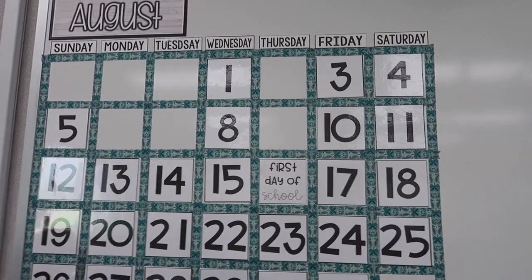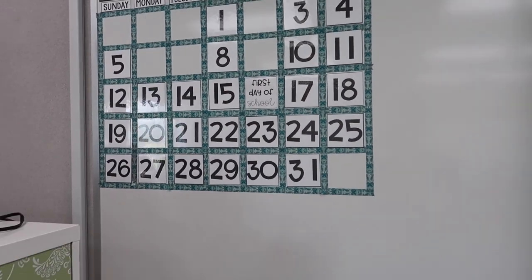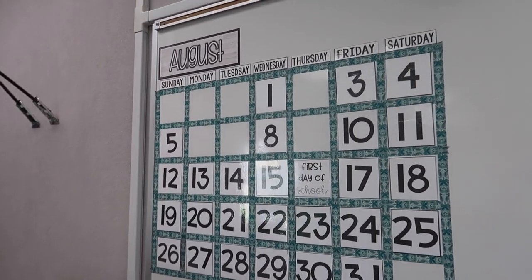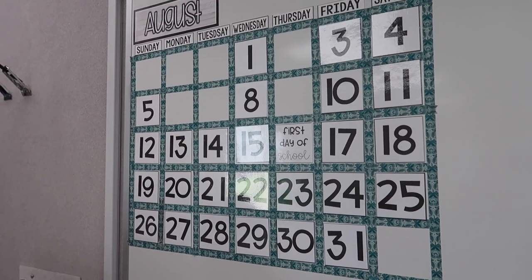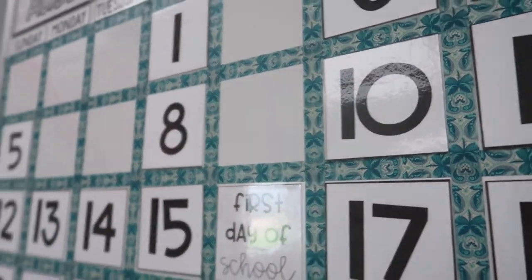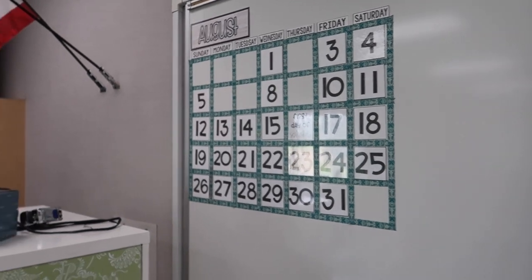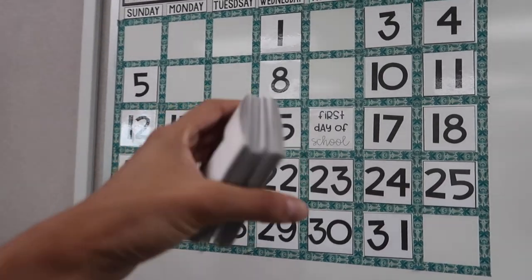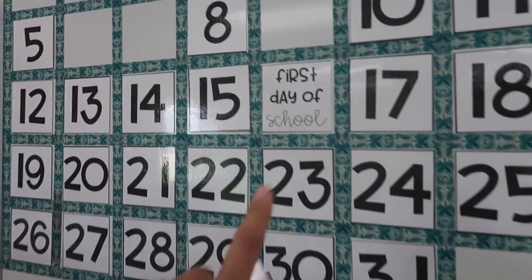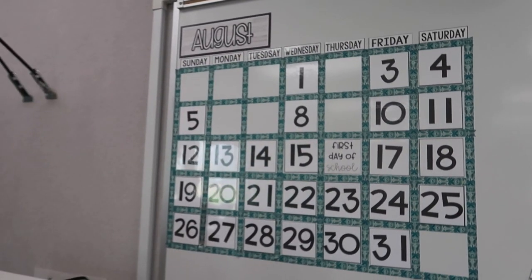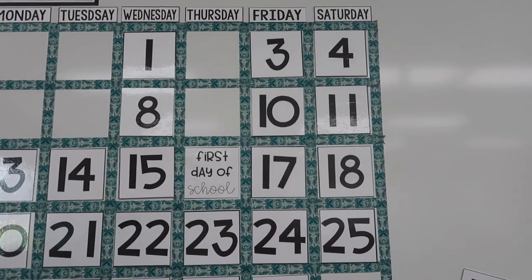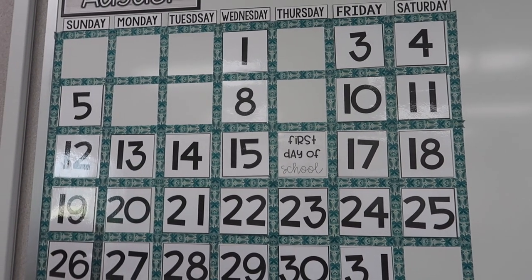I'm going crazy — I don't know what happened to 2, 6, 7, and 9. I went through all my calendar cards and these are all holidays and stuff — there are no numbers in here except the first day of school. I can't leave it like that because it'll drive me insane. Luckily I know what font and size these are, so I'll just whip some up really quick. All right, I fixed that — all done.